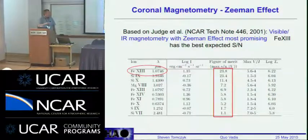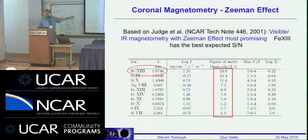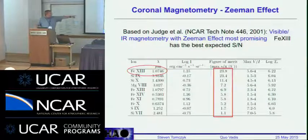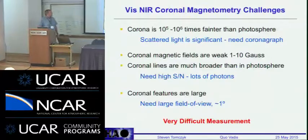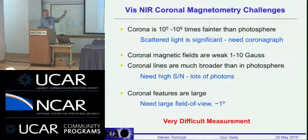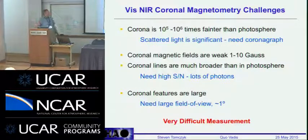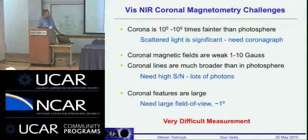The Zeeman effect scales as lambda-squared, so to measure it in the corona you want to look at emission lines in the near infrared. Phil Judge found that the iron 13 line at one micron is probably the best line to use, and the silicon 9 line at 3.9 microns is also a good candidate. There's a host of emission lines over a range of formation temperatures that could be used to measure magnetism and other plasma properties. The challenge is the corona is much fainter — five orders of magnitude less light than photospheric observations — so it's very challenging. You need a lot of aperture to collect photons. The fields are weak and the signals are small, with sensitivity of about one part in ten-to-the-fourth circular polarization per gauss.